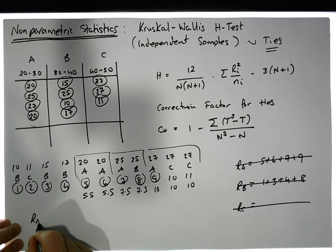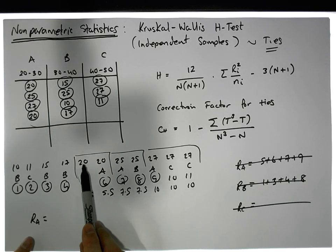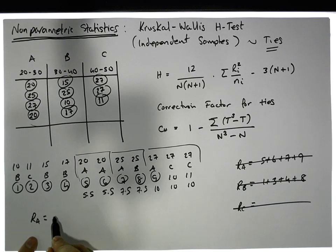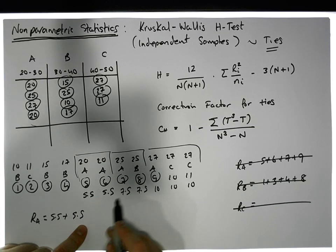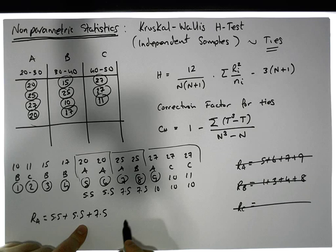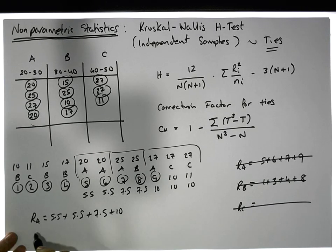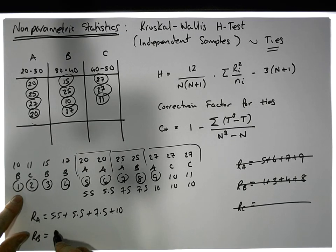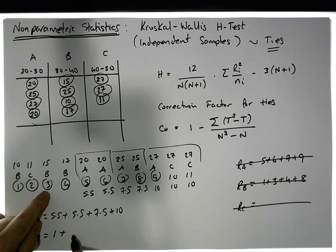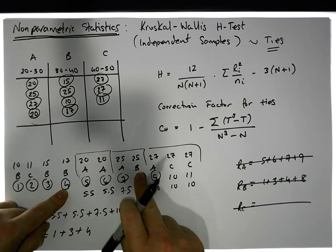So the ranks of group A: this value is 5.5, plus this one is 5.5, plus this one here is 7.5, plus this one here is 10 — that's the four observations in group A. The ranks of group B: this value is 1, plus this value is 3, plus this value is ranked at 4, and this 25 here is ranked at 7.5.